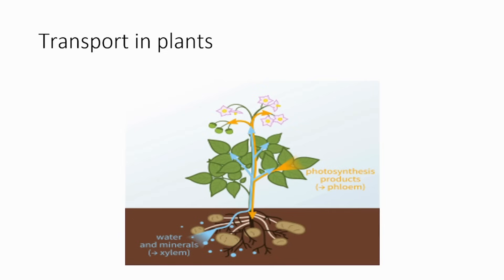More than anything else, we need to focus on transport in plants. There has to be water moving from the soil to the leaf — that path we should clearly define. Then in the leaf, using water and sunlight, the plant prepares glucose. That glucose also needs to be transported to all parts of the plant. For this, there are specialized tissues called xylem and phloem.